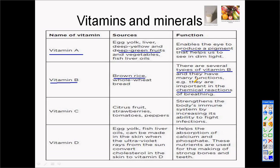Vitamin C is found in citrus fruits like oranges or lemons, and also strawberries. They are very important for the immune system of our bodies — they function to strengthen our immune system. It is very interesting that we find these kinds of fruits in the winter season, when our body is exposed most to viruses or bacteria, so that it can help our body to break down these viruses through our immune system.